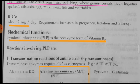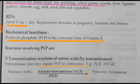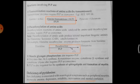Pyridoxal phosphate is involved in various transamination reactions. The transaminase enzymes require PLP as a coenzyme, such as alanine transaminase and aspartate transaminase. In this illustration, alanine plus alpha-ketoglutarate is converted to pyruvate and glutamate. For this transamination reaction, PLP is involved, and the enzyme alanine transaminase performs this reaction.